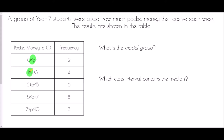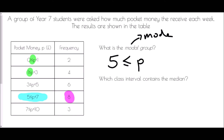We're being asked for the modal group. Modal comes from mode — it is the most common. The reason we call it the modal group is because we're dealing with grouped data. There isn't a single mode; it is an actual group which is the most common. We look at the frequencies and find the highest frequency, which is eight. The modal group is the group associated with it, which is five to seven. When we write down the modal group, we must use the same symbols as in the table. The most common amount of pocket money is between five and seven pounds.